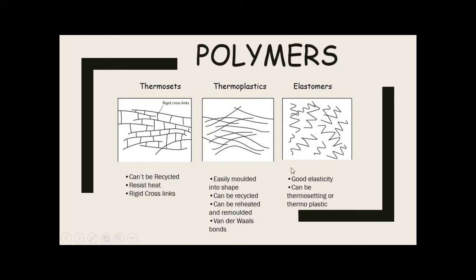Thermoplastics, at the molecular level, have fibers going across but no rigid cross-links, making them easy to mold and recyclable. If recycled too many times they'll eventually break down, but they can be recycled quite a few times. The third group is elastomers — these can be either thermoplastic or thermosetting, but typically they have good elasticity, meaning you can deform them, let go, and they return to their original shape. It's a good idea to draw these diagrams to help explain your answers.